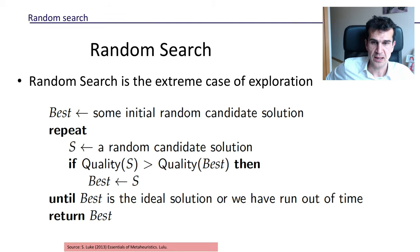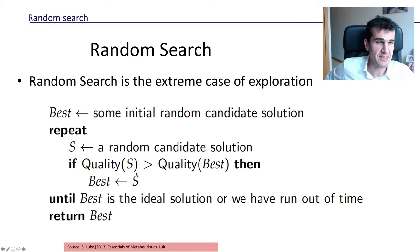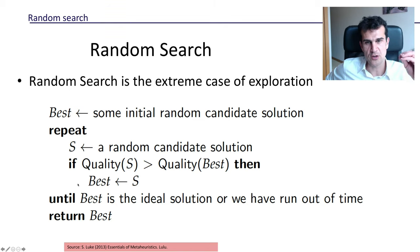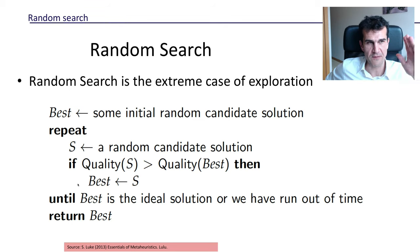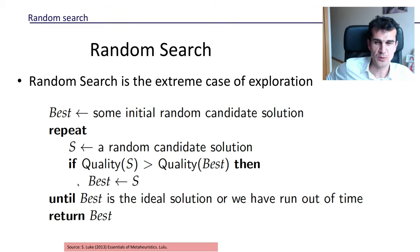If the quality of the random candidate solution we just drew is better than the quality of 'best', then the new best becomes that random candidate solution. So 'best' stores the best so far, and we keep repeating this process: drawing new candidate solutions, and if the new one is better than 'best' we replace it; if not, we throw it out and forget about it.